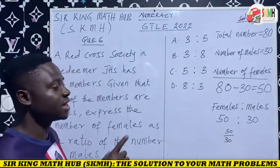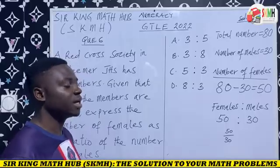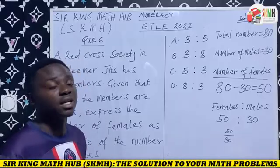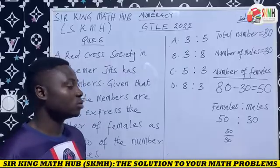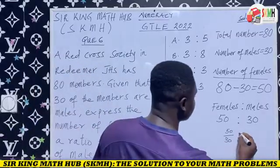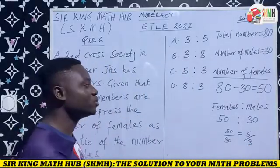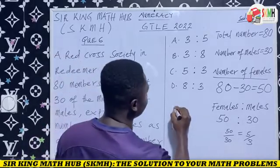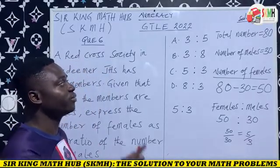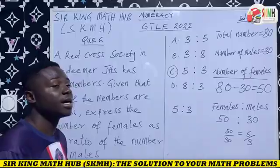When written as a common fraction, it gives us 50 out of 30. In fractions, our final answer must always be in the simplest or lowest form. So we reduce 50 out of 30 to the lowest form, which gives us 5 out of 3. This can also be written in ratio form as 5 is to 3. So from the alternatives, the correct option is 5 is to 3. Thanks for watching.